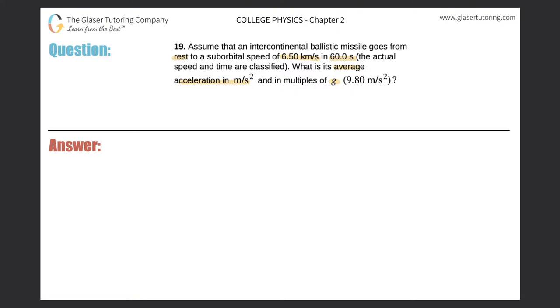Okay, so what are we given in the problem? It says that a missile goes from rest to a speed of 6.5 kilometers per second. So those sound like rates to me, specifically velocities. It starts at rest and then gets to a speed of 6.50 kilometers per second. That's the final velocity. And the initial velocity here at the beginning was 0 because it started at rest, kilometers per second.